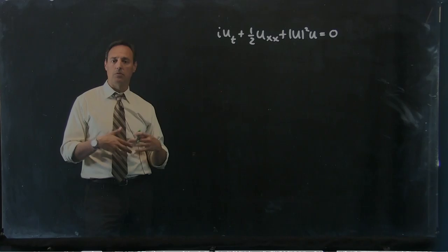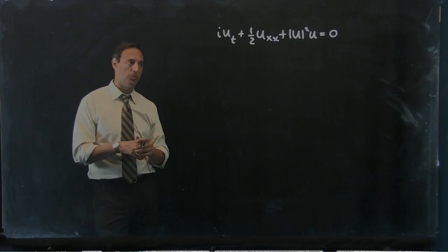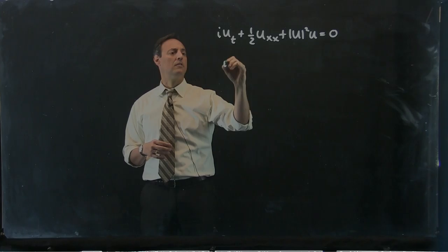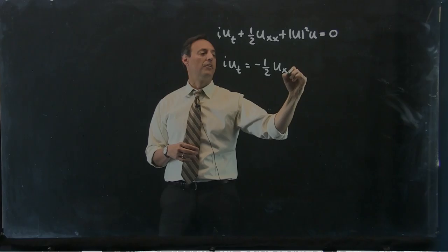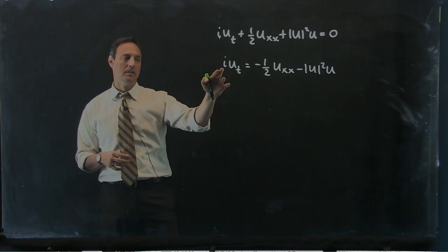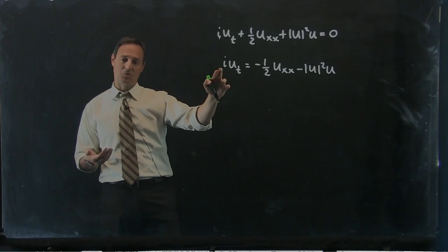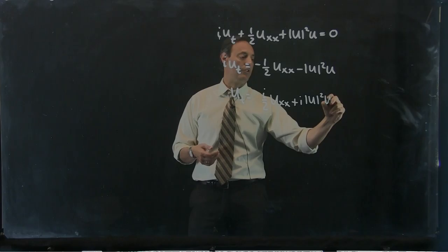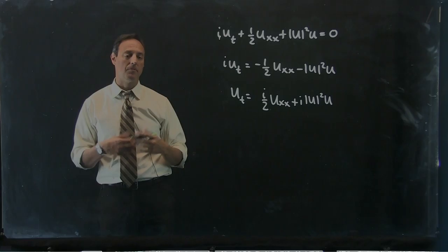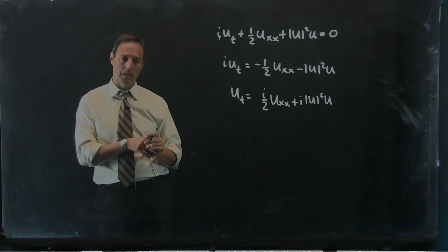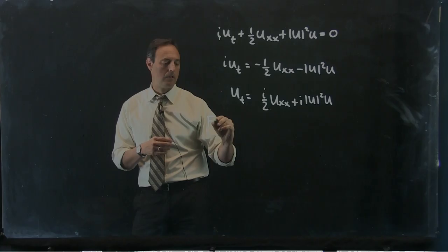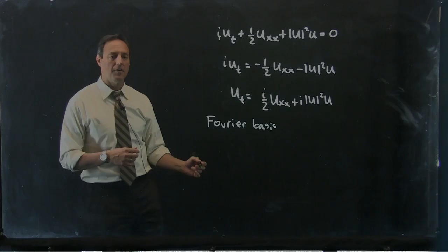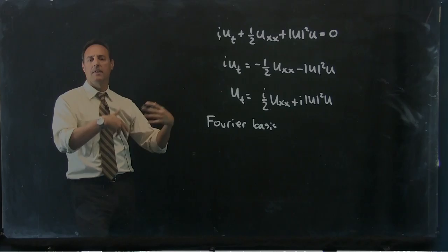First, let's set up the architecture for solving this using a Fourier mode expansion basis, which is what you might try numerically — a spectral method. I can take everything to the right-hand side and multiply by minus i, which gives minus i squared (i.e., positive 1), so I get ut, then i over 2 times uxx, plus i times the absolute value of u squared times u. So now we're setting this up so ut is on the left and can be solved using a Fourier basis.